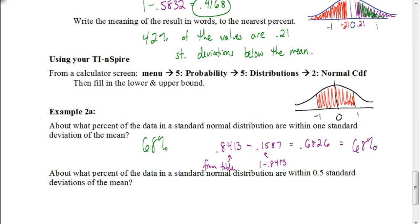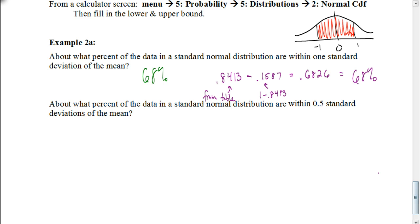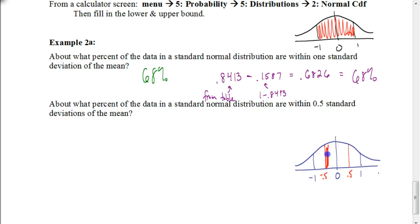You can see we can do this using the table or using a calculator — you want to be familiar with both techniques for the quiz and the test. Let's look at the next example: about what percent of the data in a standard normal distribution are within 0.5 standard deviations of the mean? We're trying to find the area under the curve between negative 0.5 and 0.5. Go ahead and try this one on your own — pause the video and hit play when you're ready to check your answer.